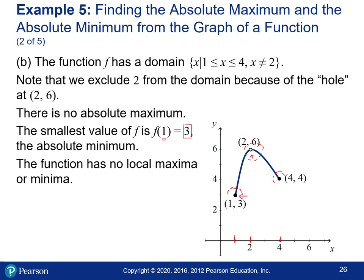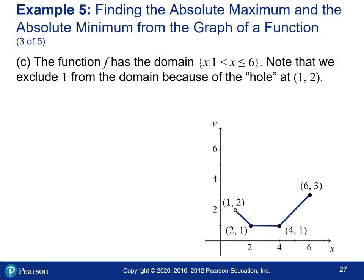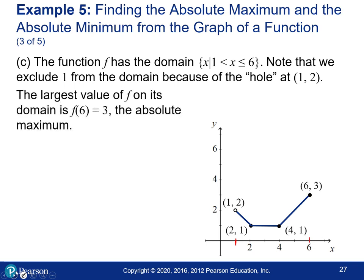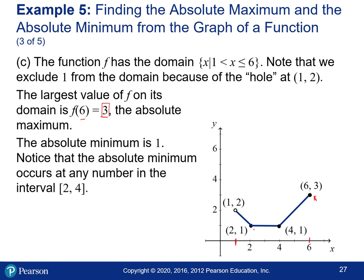For the next function with a hole at x = 2: even though that would appear to be the highest point, the graph has no absolute maximum because that point doesn't exist — it's a hole. The minimum still exists: it's the absolute minimum at y = 3 when x = 1. This function also has no local max or min because the endpoints have no open neighborhoods around them, and the apparent max point doesn't exist.